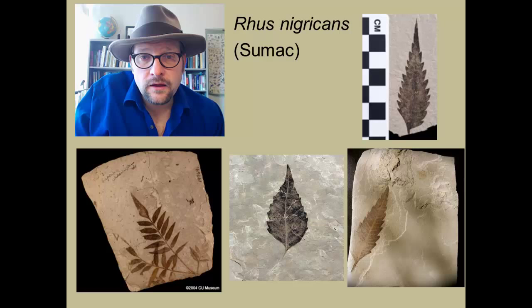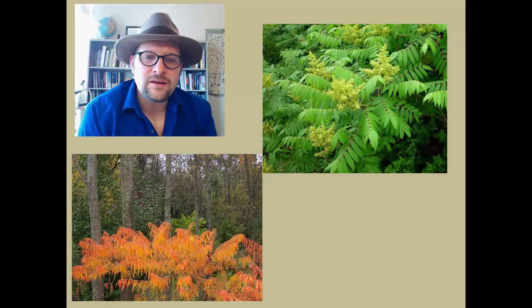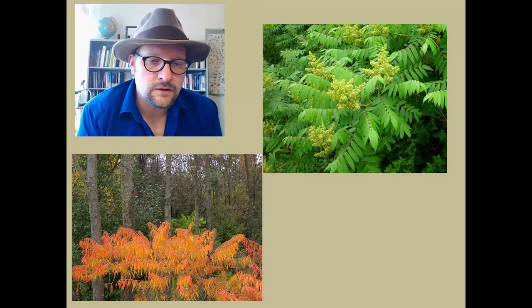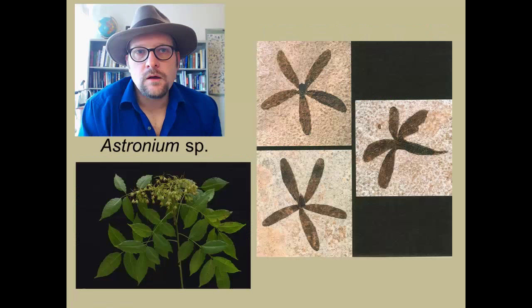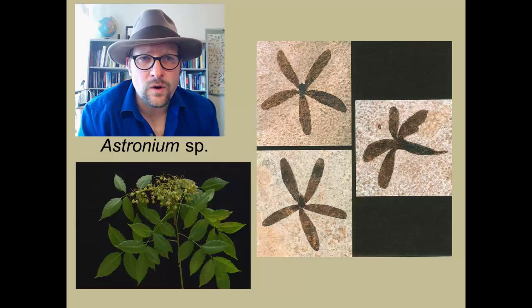Sumac grows in Utah today, including along canals and creeks in the foothills of the Uinta Mountains near Vernal, displaying fantastic bright autumn colors. The Green River fossils are placed in a separate species, but the genus is widespread, known throughout North America, Asia, and Europe. Fossil flowers of the genus Astronium — a member of the cashew family native to Central and South America, with many species in Brazil — are also known. Their presence in Utah and Wyoming demonstrates a much warmer environment during the Eocene, with ranges extending all the way into northern Wyoming.